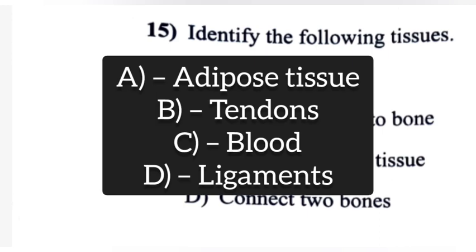Answer A: Adipose tissue, B: Tendons, C: Blood, D: Ligaments.